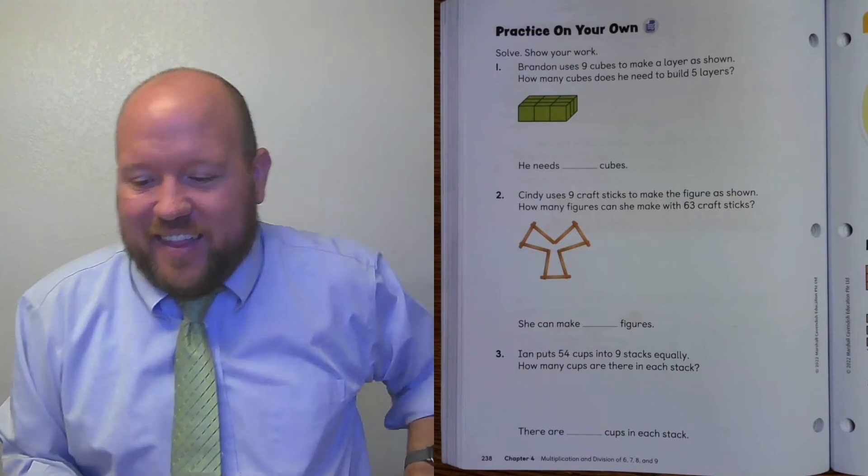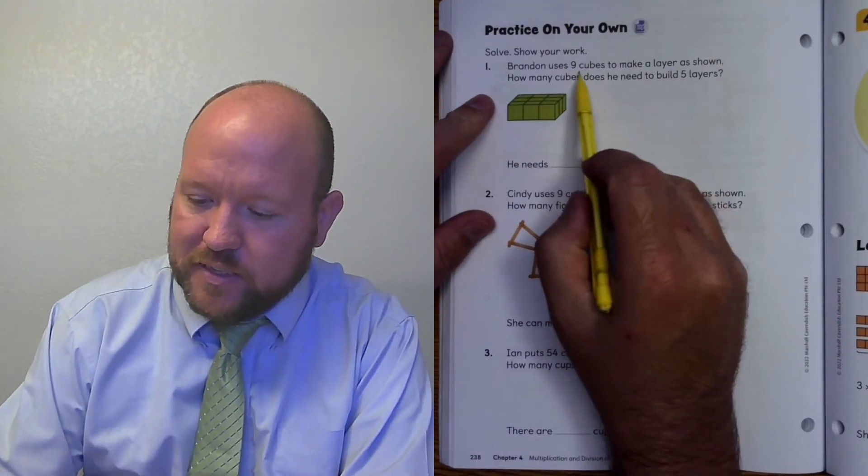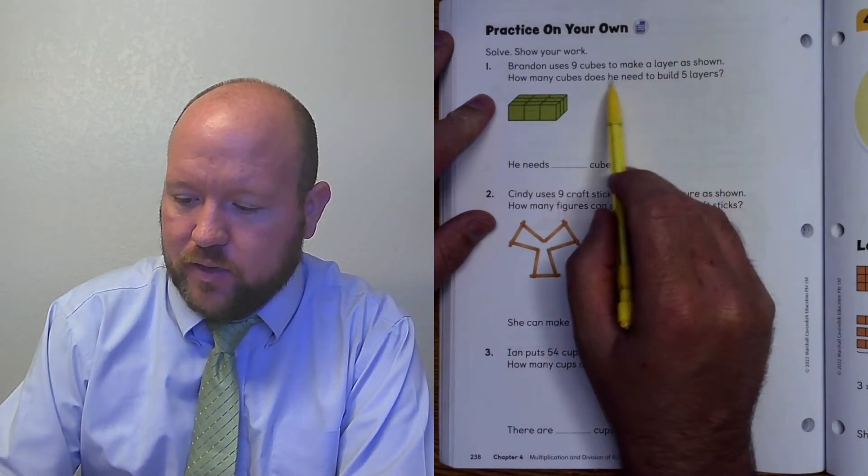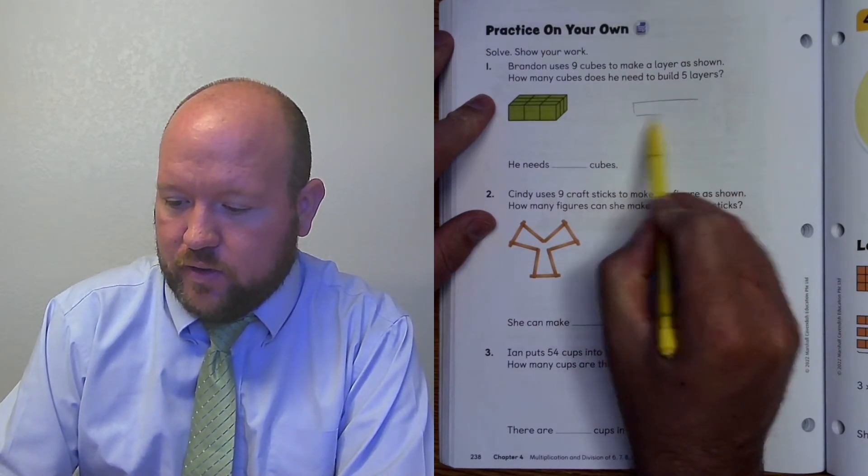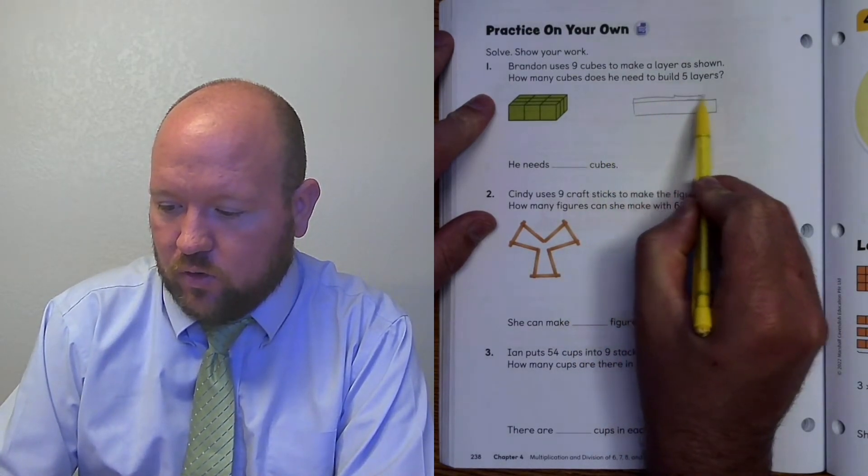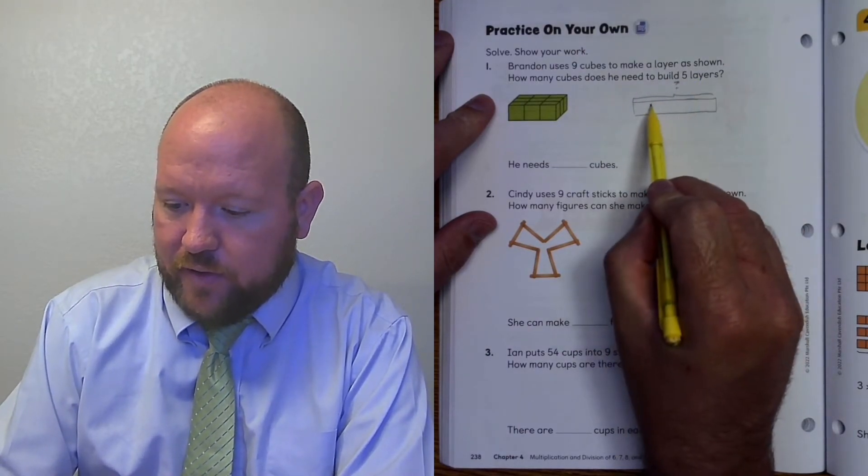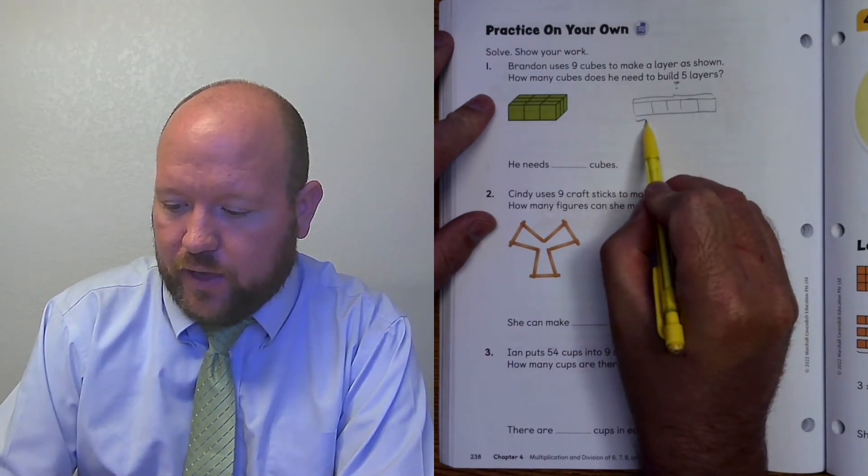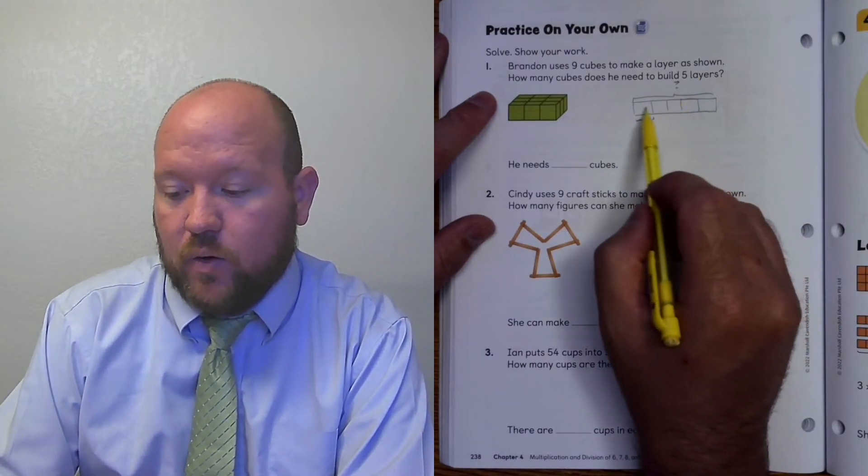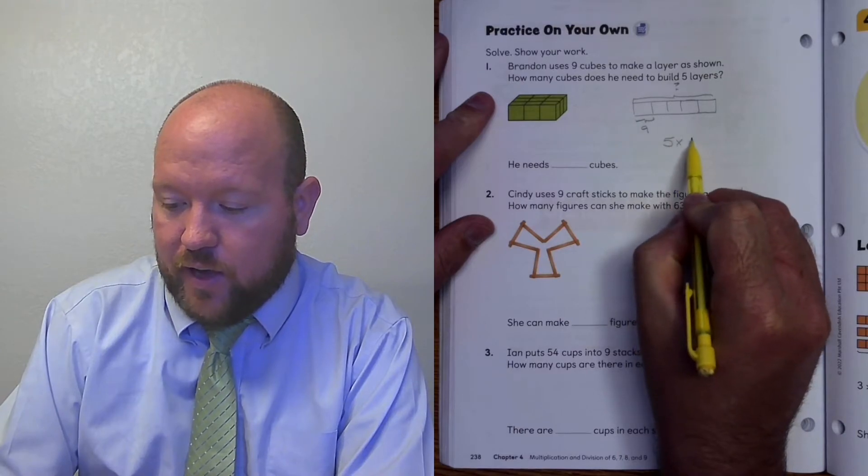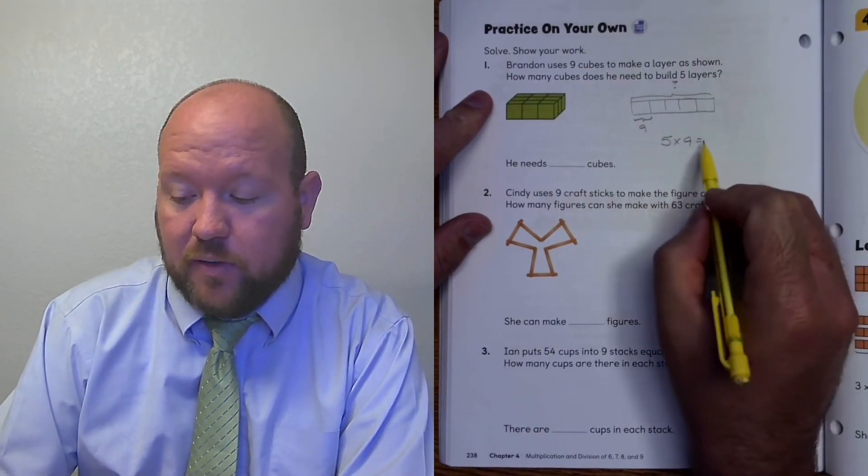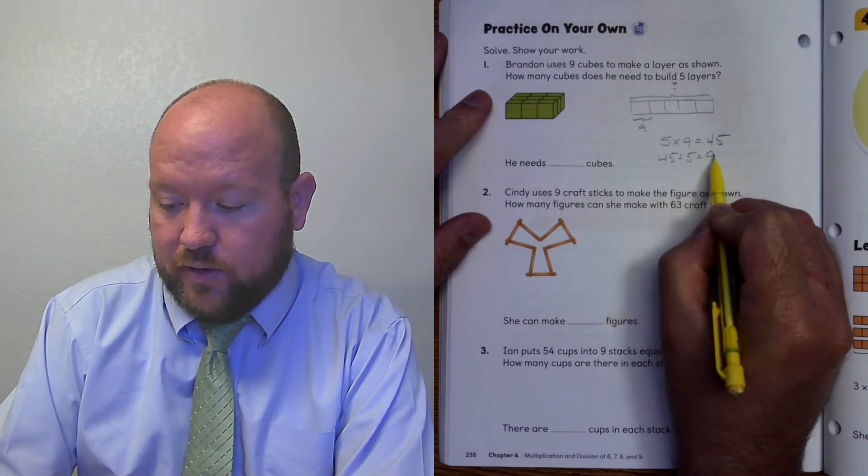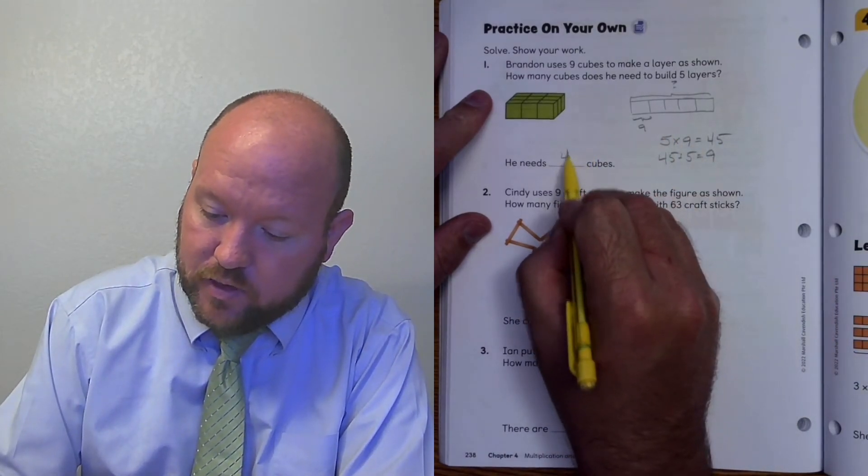So let's look at these together. Brandon uses 9 cubes to make a layer as shown. So there's a layer. How many cubes does he need to build 5 layers? So model this. We're looking for the total number of cubes. He wants 5 layers. So I draw 4 lines to break it into 5 parts. And each one has 9. So what operation are we going to use here? We're going to do 5 groups of 9. We're going to do 5 times 9. We should hopefully know our 5s. 5 times 9 is 45. 45 divided by 5 equals 9. And those two match. So the answer is 45.